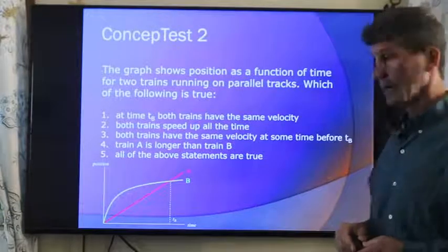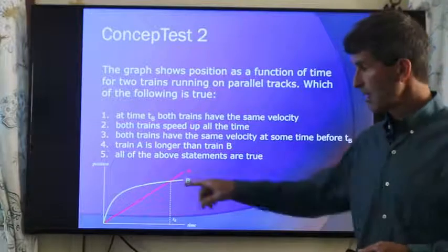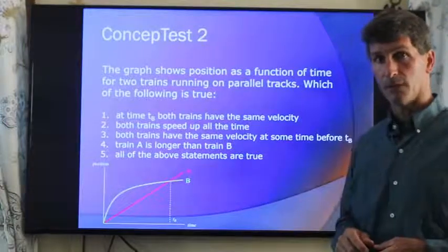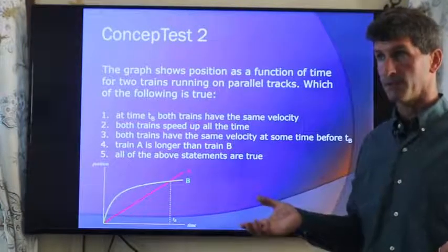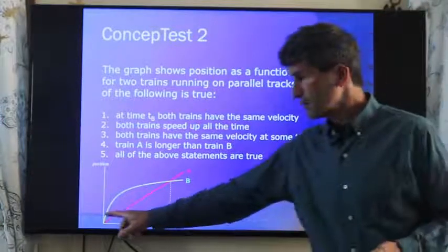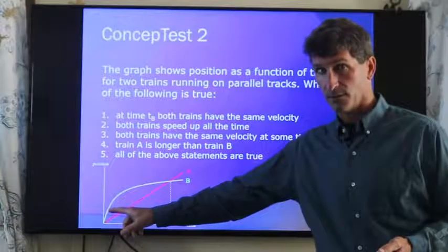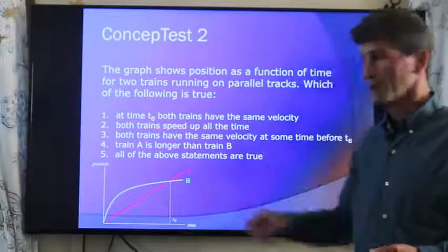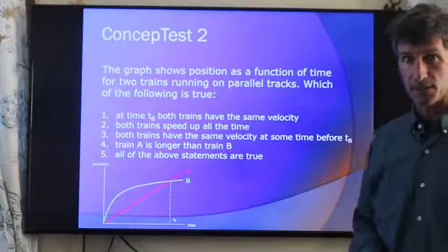Both trains speed up all the time. Also not true. A's slope is constant. Therefore, if we're taking a look at the instantaneous velocity at any time, it's the same value. B, however, the slope is greater here at the beginning. It's going faster. And then it gradually slows down as the slope becomes less and less.